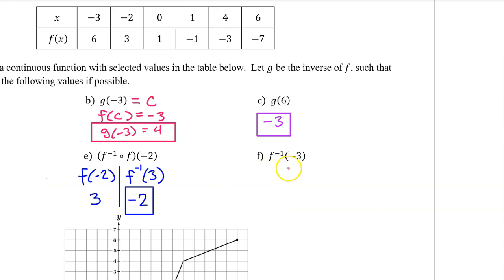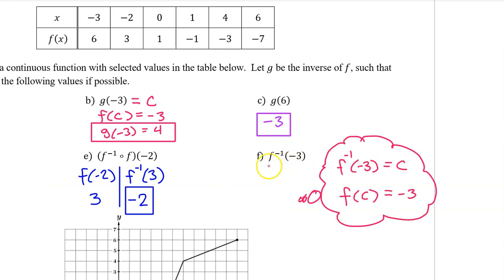For part F, we just need to find f inverse at negative 3. When evaluating the inverse of f, you ask yourself: f at what is equal to that number? f at what is equal to negative 3? That's 4.